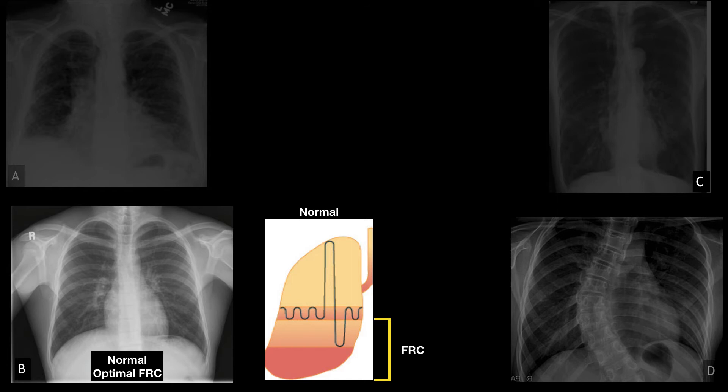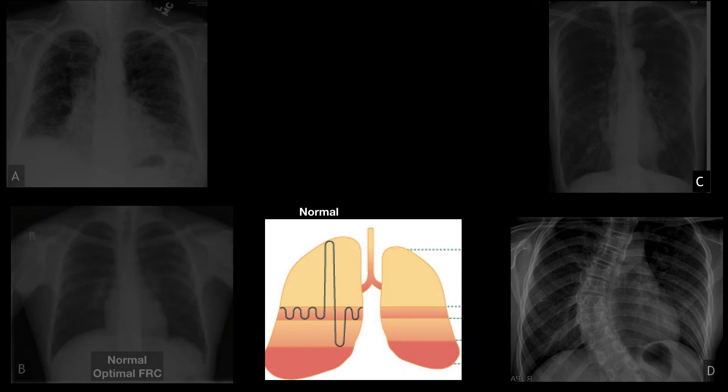Let's compare that to someone with restrictive disease, where the functional residual capacity is smaller than a normal optimal FRC. When this occurs, these alveolar units are falling closer to shunt on the VQ mismatch continuum.